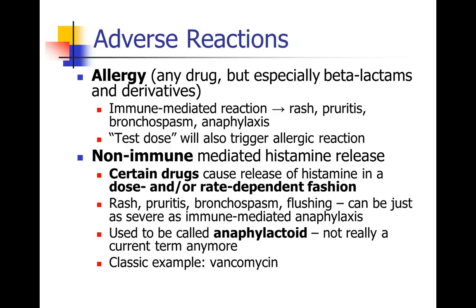Related to this is what we call a non-immune-mediated histamine release. Certain drugs cause histamine to be released, and the more drug you give, the more histamine is released — it may be dependent on the dose or the rate of administration. The reactions can be just like allergic reactions: rash, itching, bronchospasm, flushing, and even anaphylaxis. This used to be called an anaphylactoid reaction, but now you would just call it a non-immune-mediated anaphylactic reaction. Vancomycin with its Red Man syndrome is a classic example of this non-immune-mediated histamine release.